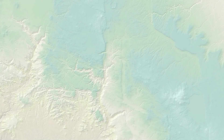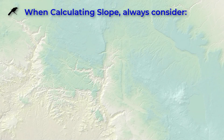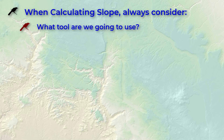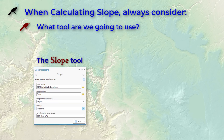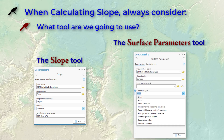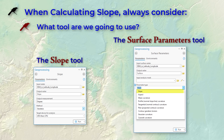Before we start, there are a few things we should always consider before calculating slope. First, which tool are we going to use? Currently, ArcGIS Pro has two tools that calculate slope: the slope tool, which is their original tool, and a newer tool called the surface parameters tool. Depending on which tool you use, you have to consider some different issues.